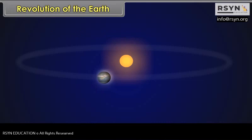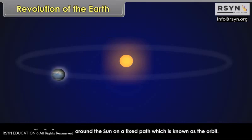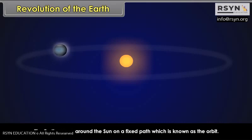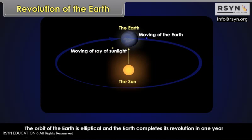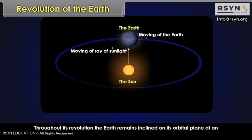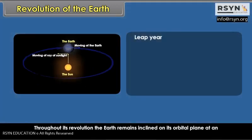Revolution of the Earth. The earth moves around the sun on a fixed path, which is known as the orbit. The orbit of the earth is elliptical, and the earth completes its revolution in one year — 365 and one-fourth days. Throughout its revolution, the earth remains inclined on its orbital plane at an angle of 66 and a half degrees.